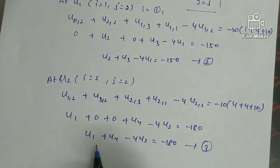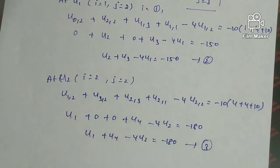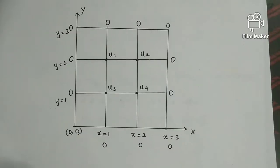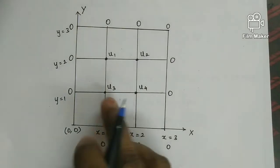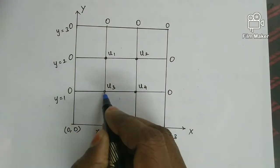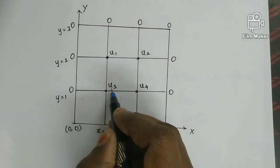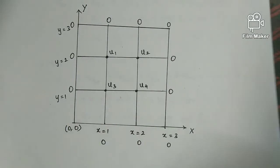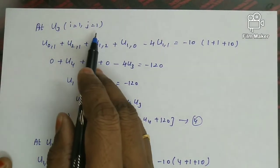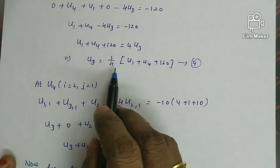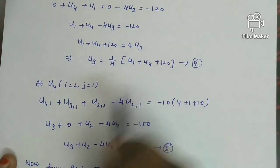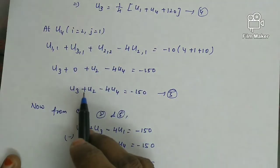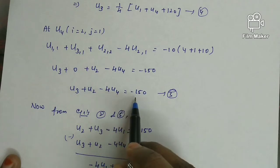At u2, the equation gives: u1 plus u4 minus 4u2 equals minus 180. That is the third equation. For u3 with i=1, j=1: u3 equals one-quarter times (u1 plus u4 plus 120), that is equation 4. At u4 with i=2, j=1: u3 plus u2 minus 4u4 equals minus 150, that is equation 5.